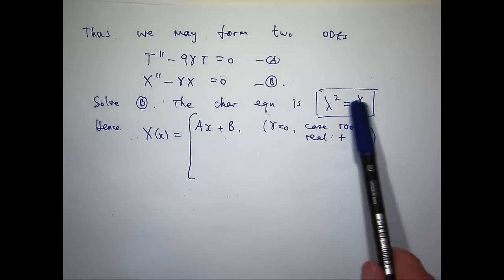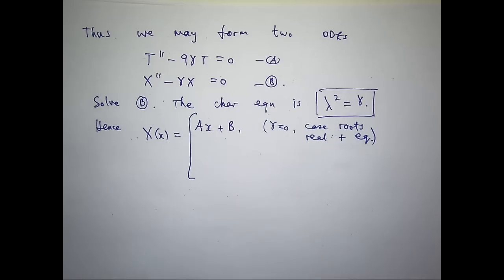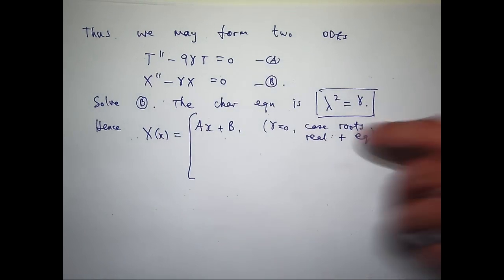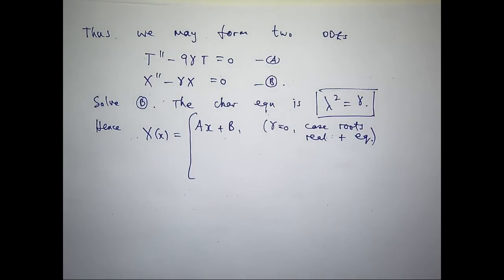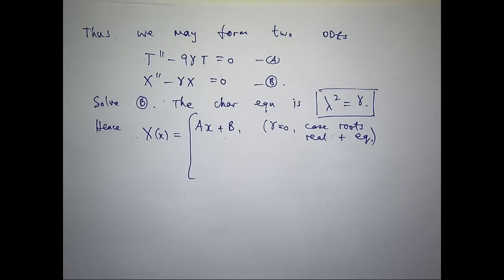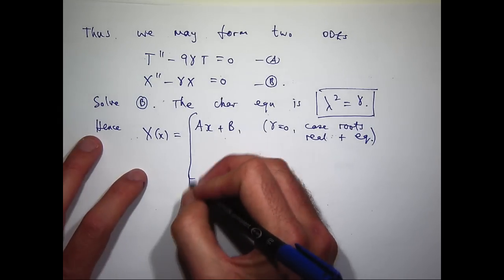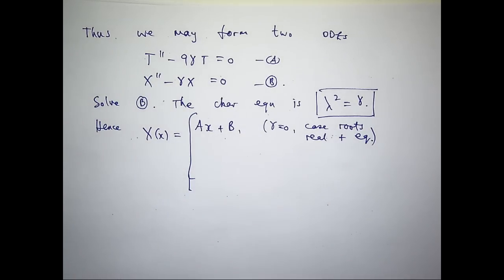Let's look at the case when gamma is positive. What kind of roots? Real and unequal roots. In that case, the general solution is a linear combination of exponential functions.